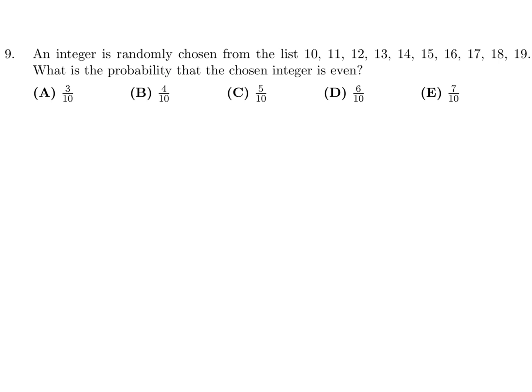An integer is randomly chosen from this list. What is the probability that the chosen integer is even? Okay, so probability, first of all, what goes in the denominator is how many total choices. So we have 1, 2, 3, 4, 5, 6, 7, 8, 9, 10. So 10 goes into the denominator.